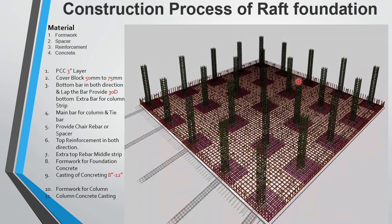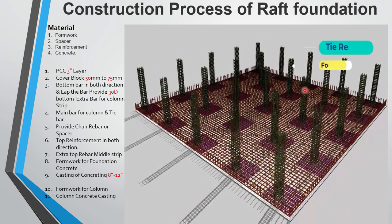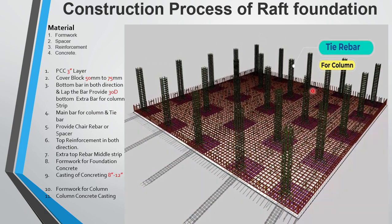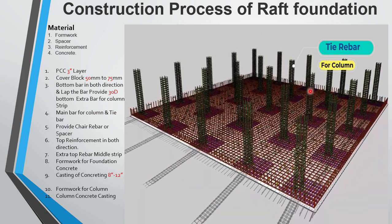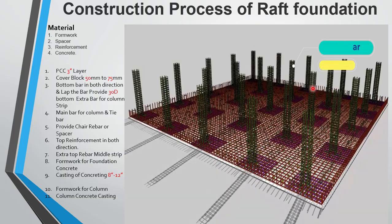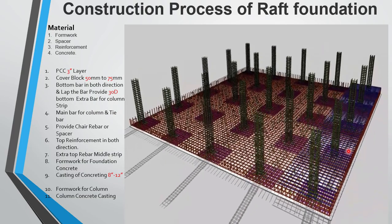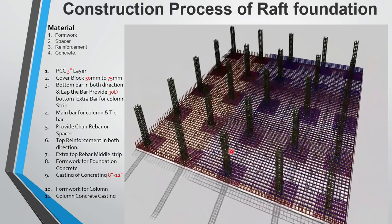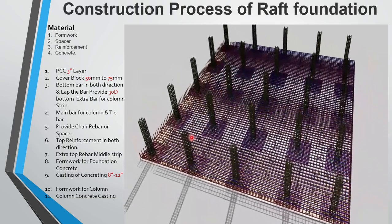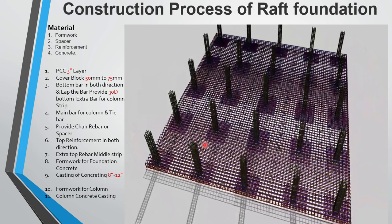This is the extra bar for column strip. Then we lay the top reinforcement in both directions, which is supported by this chair bar.